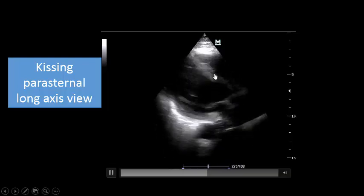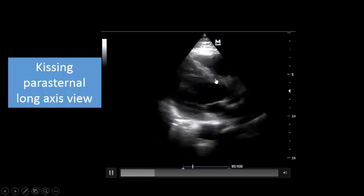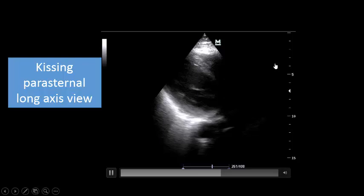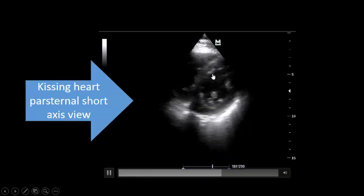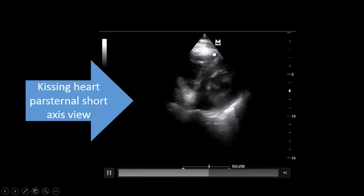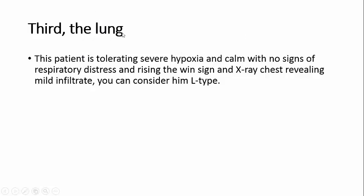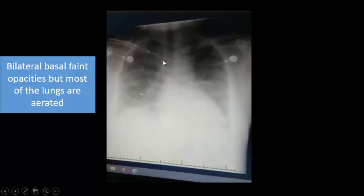Parasternal long axis view — kissing heart, good contraction, right side not dilated. Third, this patient is tolerating severe hypoxia and is awake with no signs of decompensated respiratory failure, and the X-ray reveals mild infiltrate. You can consider him L-type. On the admission X-ray you see a lot of air, there is opacity but really there is a lot of aerated area in the lung.